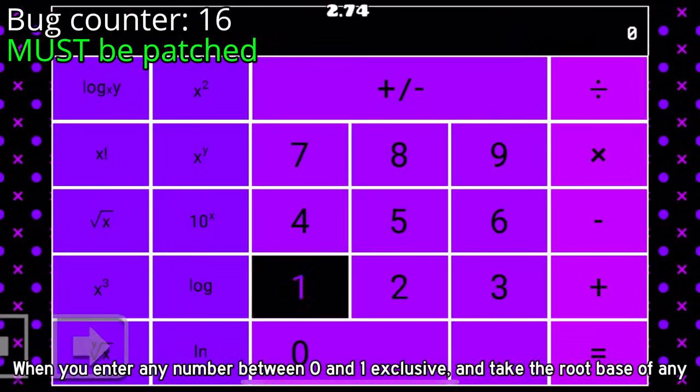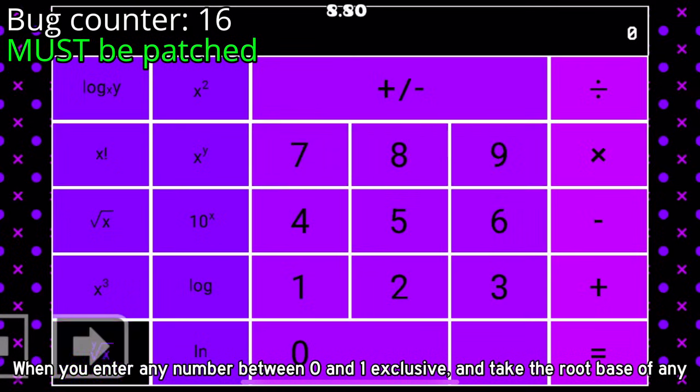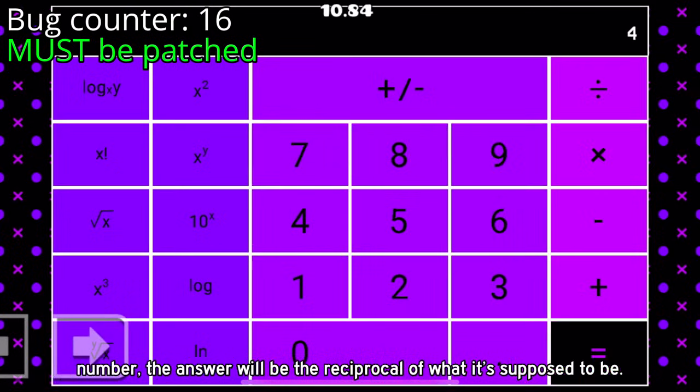When you enter any number between 0 and 1 exclusive, and take the root base of any number, the answer will be the reciprocal of what it's supposed to be.